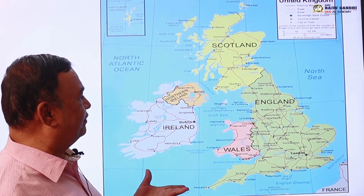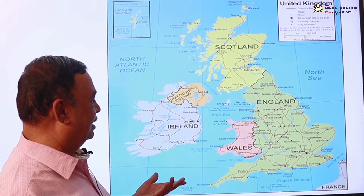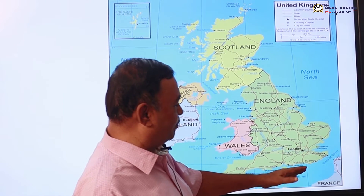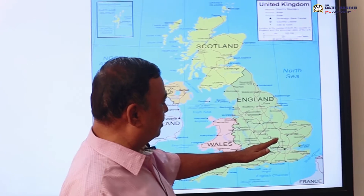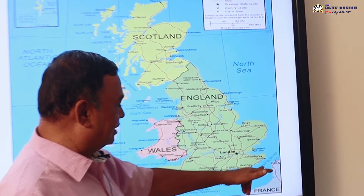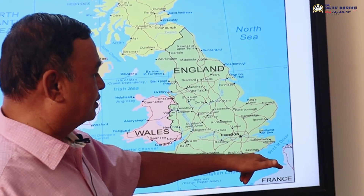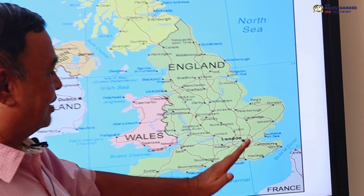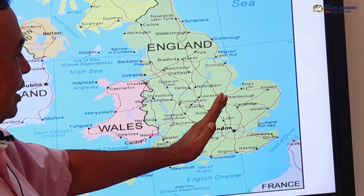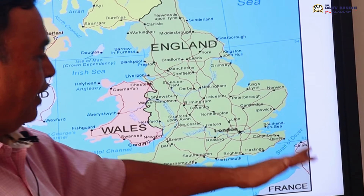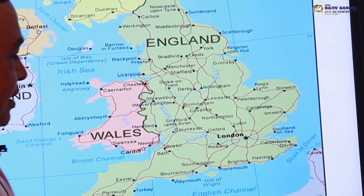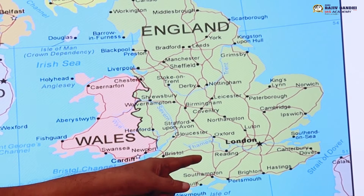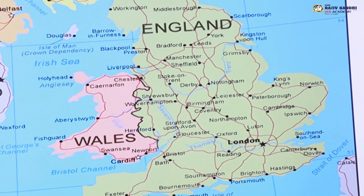There is a possibility of asking this question. Then next, which is the strait that separates Great Britain from France? This is the Strait of Dover. There is also another channel south of England, which is called the English Channel.